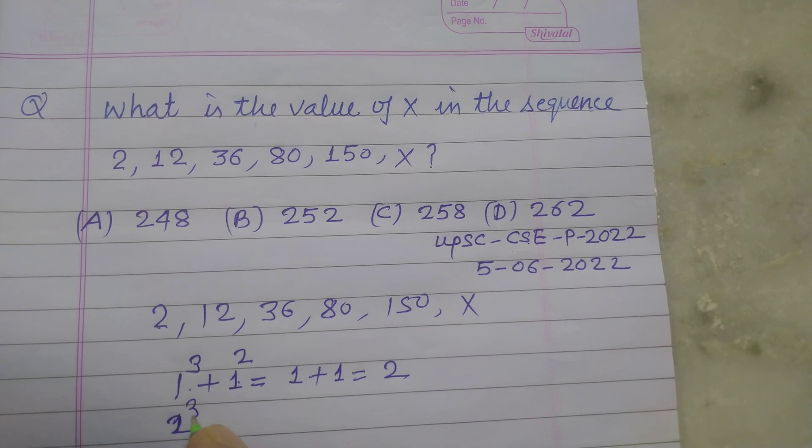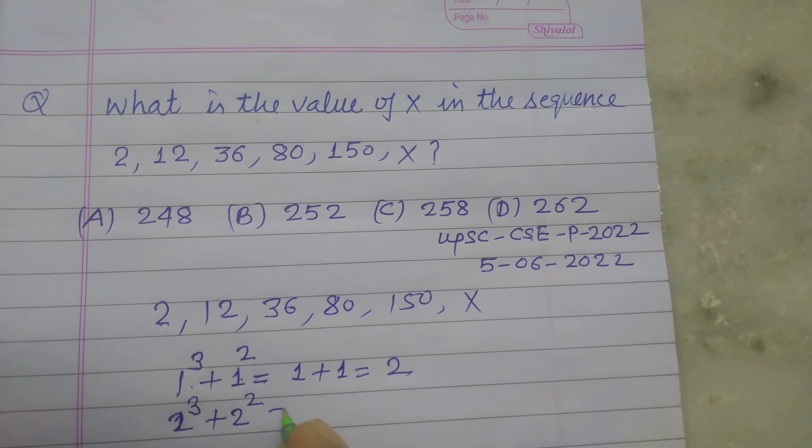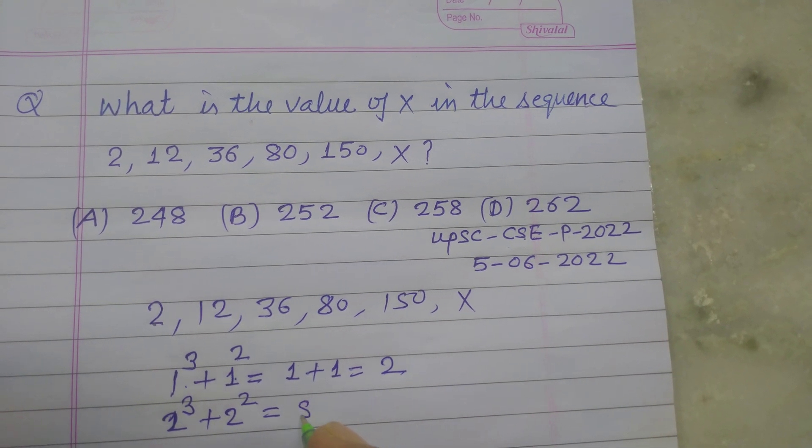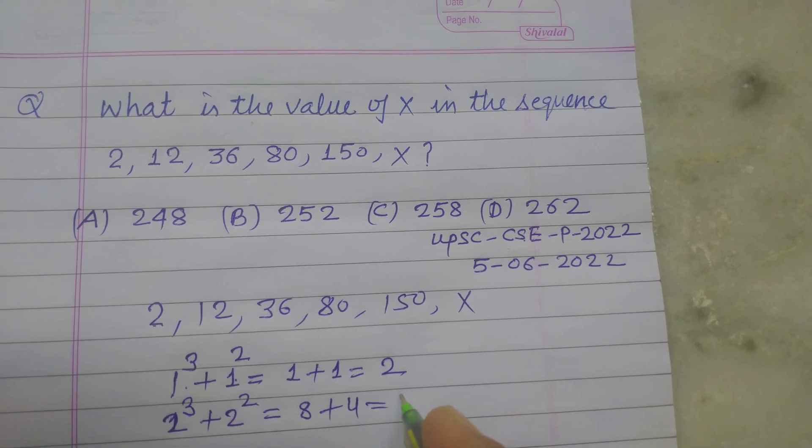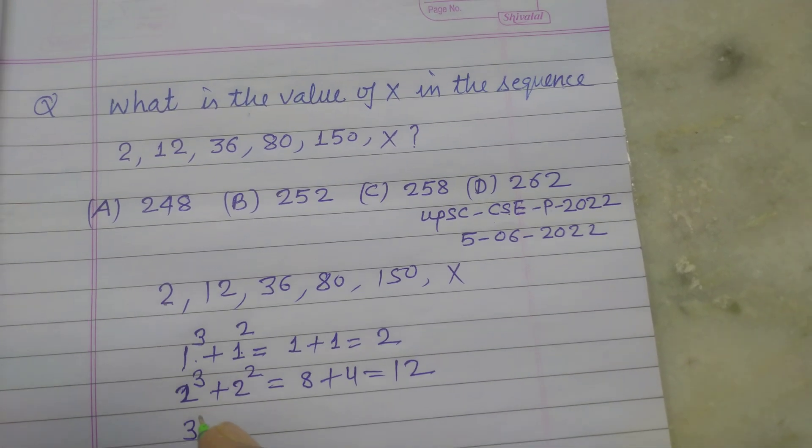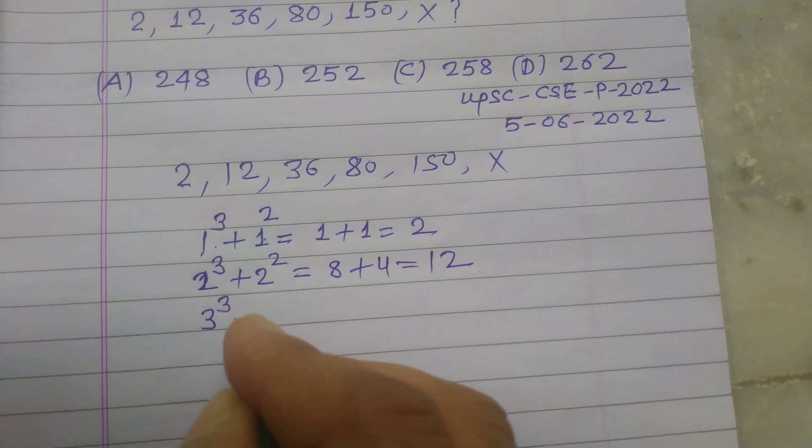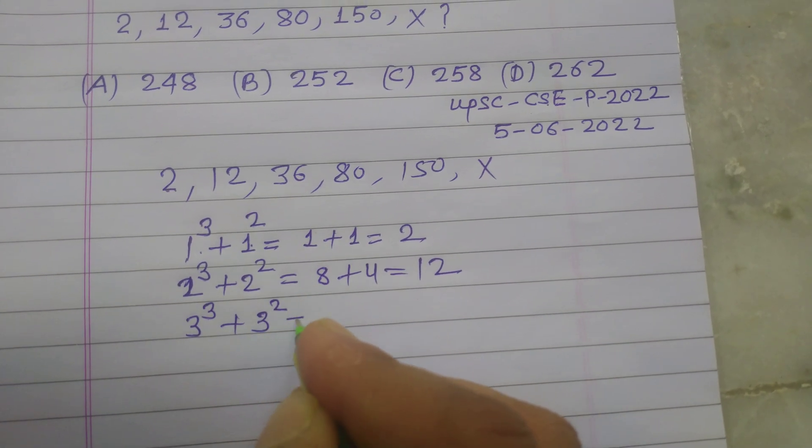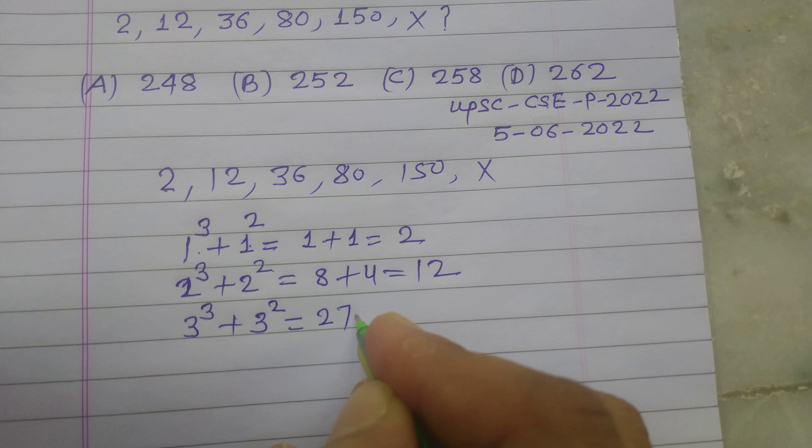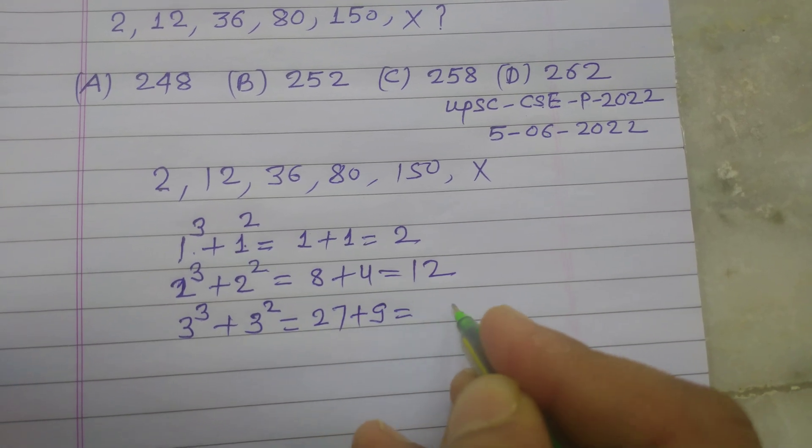Now cube of 2 plus square of 2. So this is 8 plus 4, this is 12. And cube of 3 plus square of 3 equal to, this is 27 plus 9, 36.